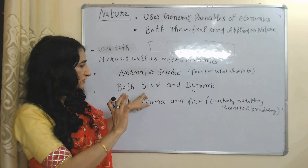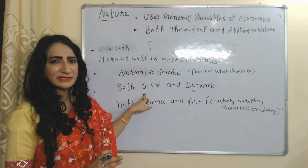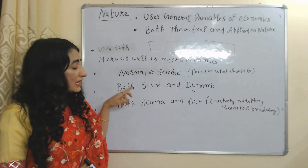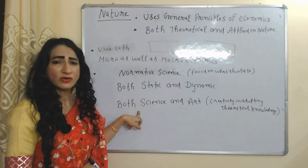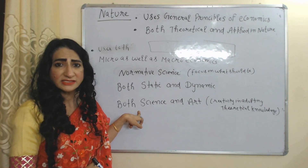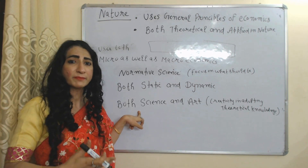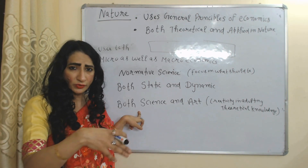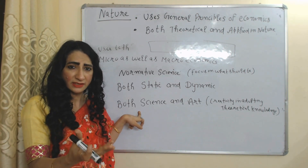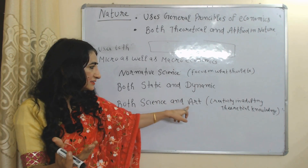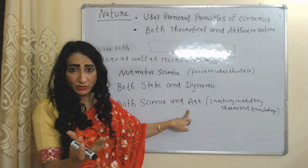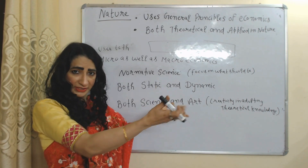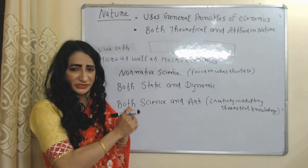Agricultural economics is both a science and an art. It is a science because it uses scientific principles to analyze economic data. It is an art because it involves creativity in adopting theoretical knowledge to practical situations.